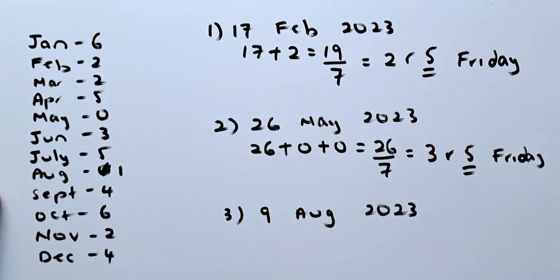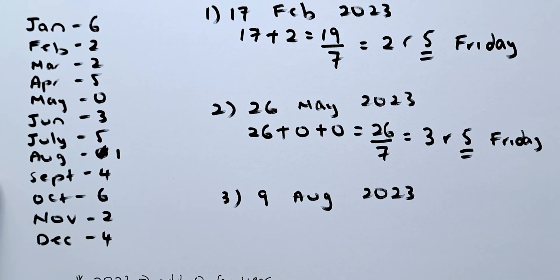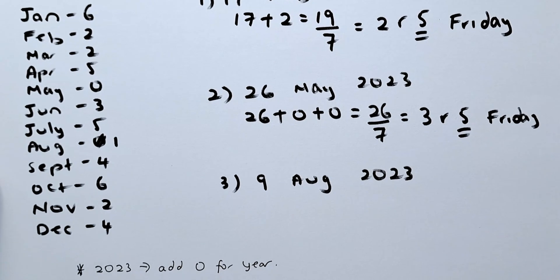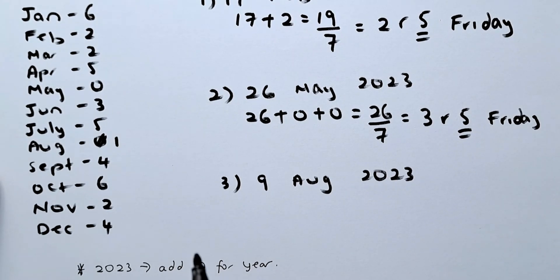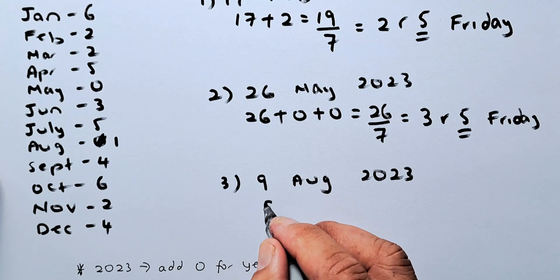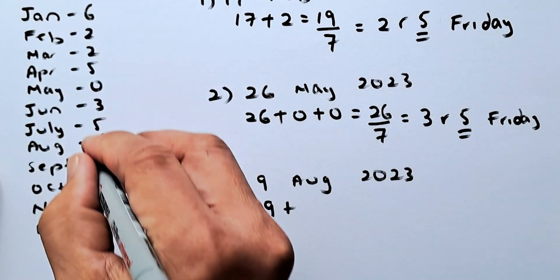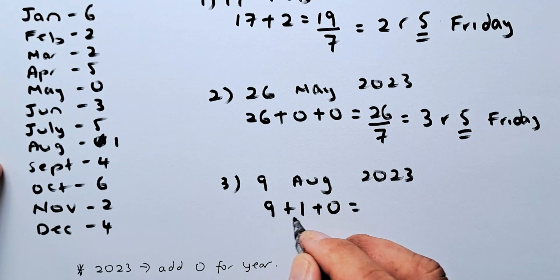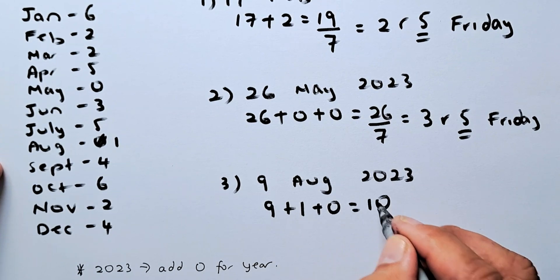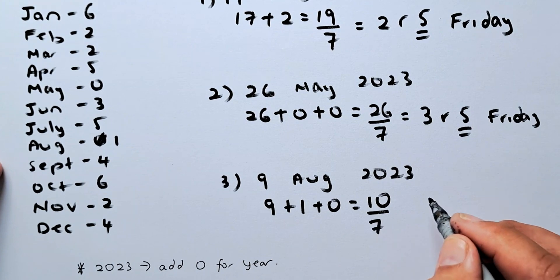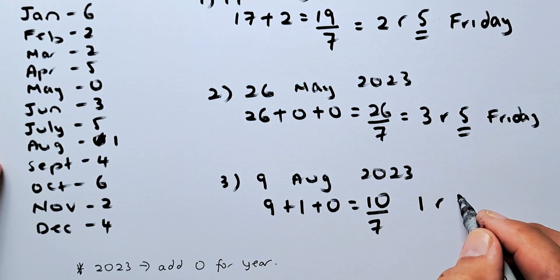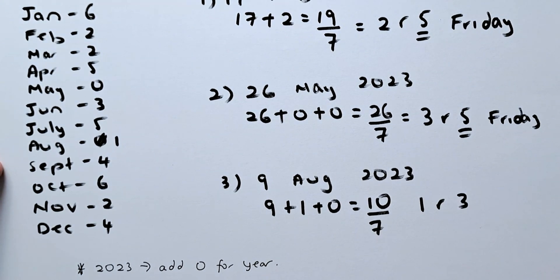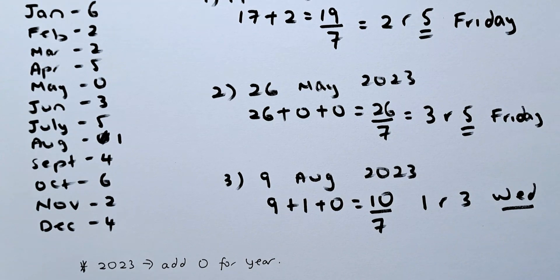Now we look at 9th of August, 2023. That is actually the Singapore National Day of Independence. So 9, it's just going to be 9. August, you look at August, it's going to be 1. And the year is 0. So you're going to get 9 plus 1 plus 0, it's going to be 10. Next step, you're going to divide by 7. And you're going to get 1, remainder 3. So the remainder 3 says that you are going to be a Wednesday. So that is how you calculate the day in 2023.